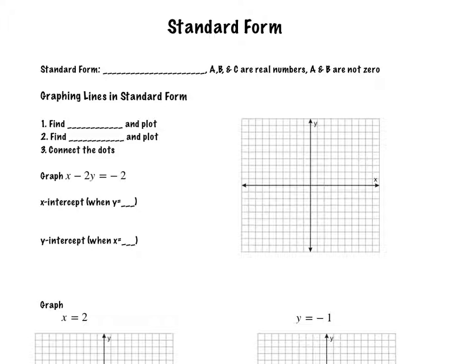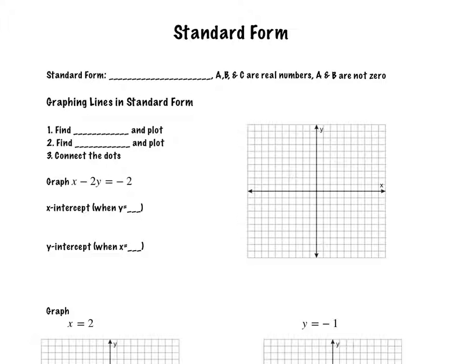We'll talk about how you could use standard form to rewrite into slope-intercept form, which you know. Standard form is ax plus by equals c. A, b, and c are going to be real numbers, and a and b cannot be zero.